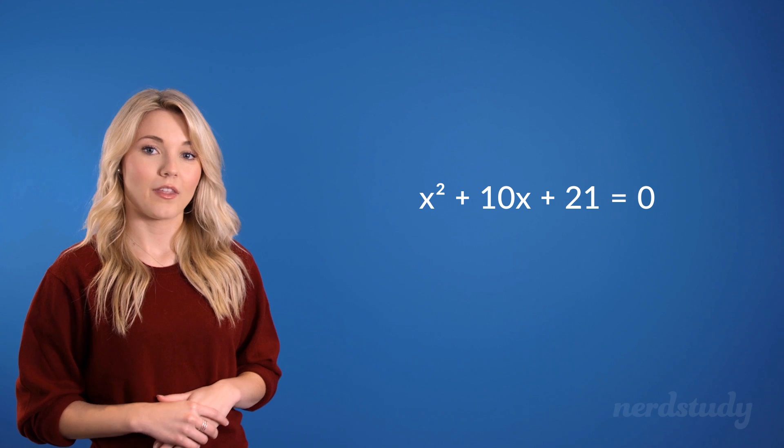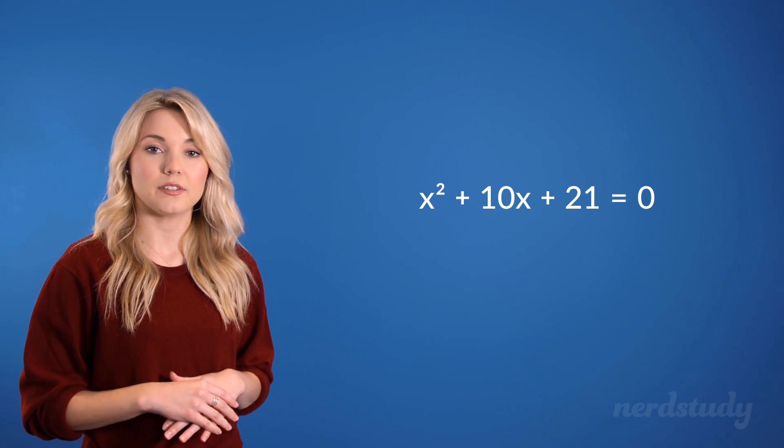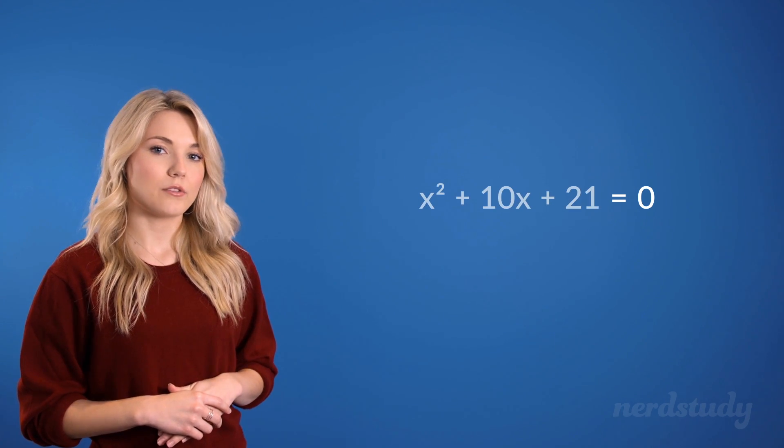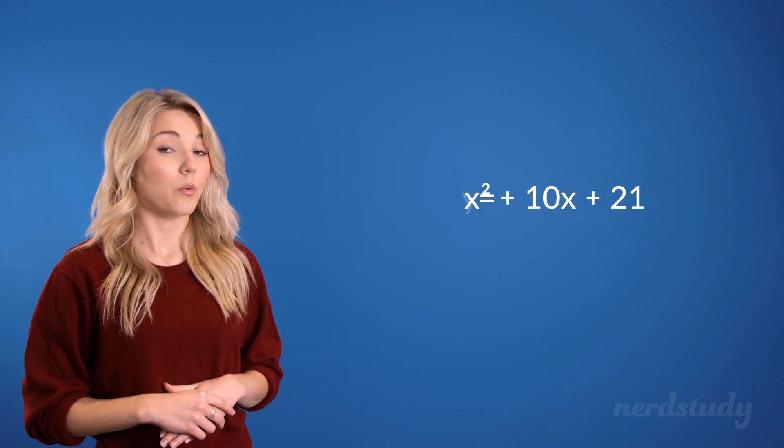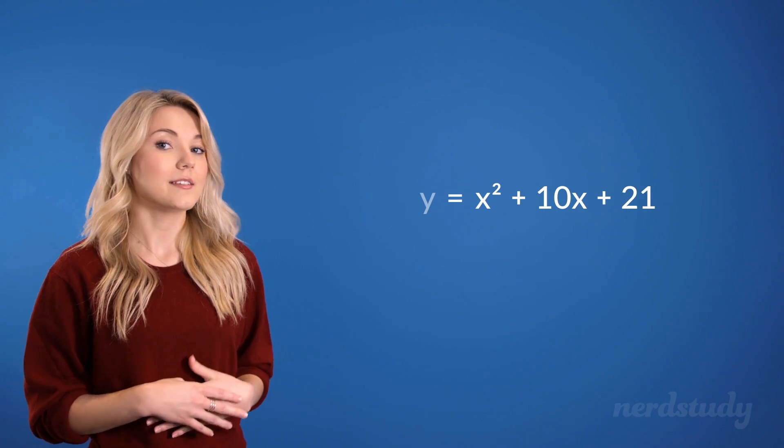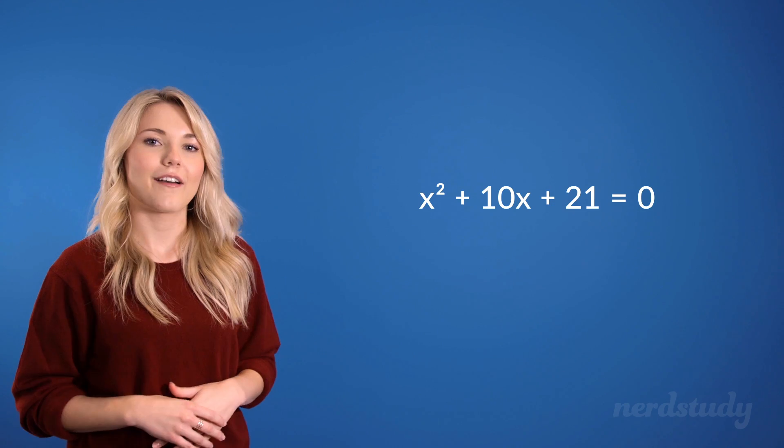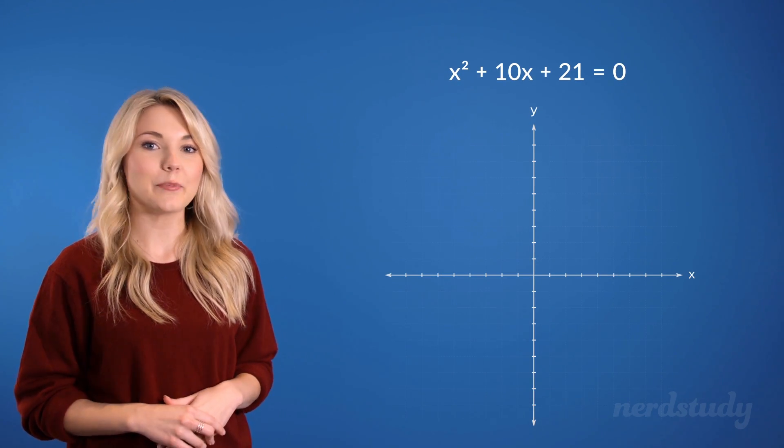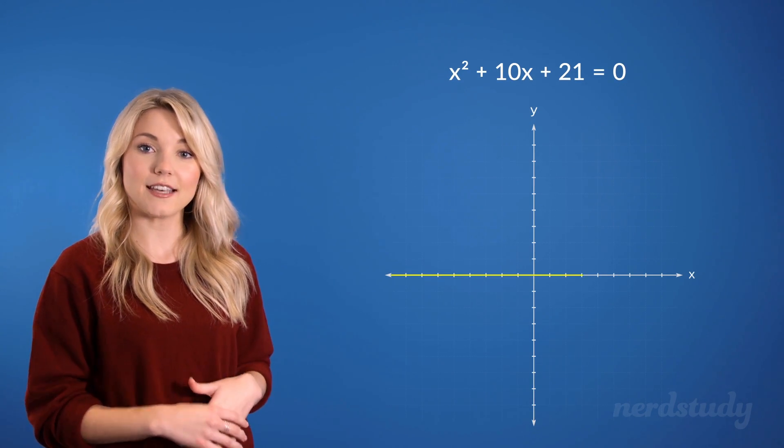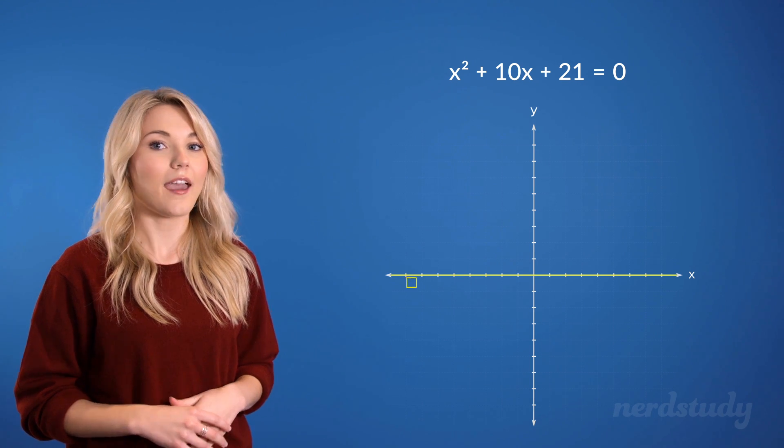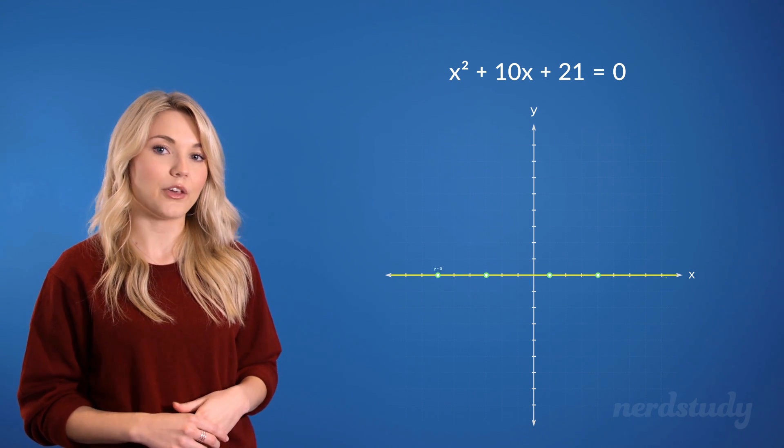Let's take a look at an example of a quadratic equation. Notice how it is set to be equal to 0. Remember how we usually had the equation set to equal y? Well, now we're basically fixing y at 0. On the graph, we are looking at any point on our parabola that crosses this line, since any point on the x-axis would yield a y value of 0.